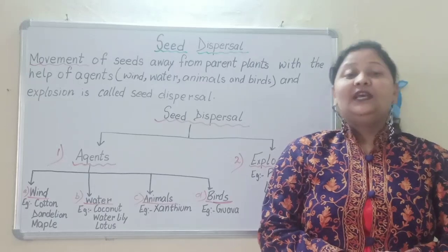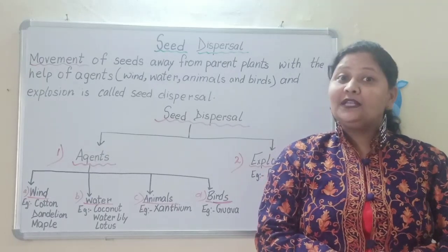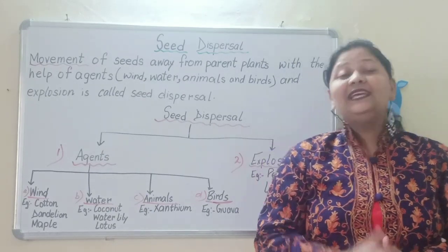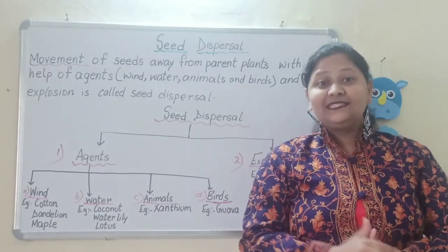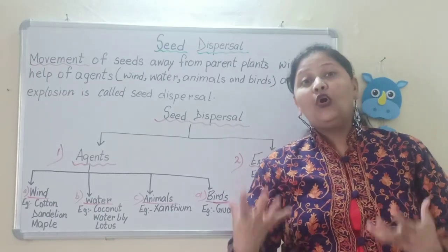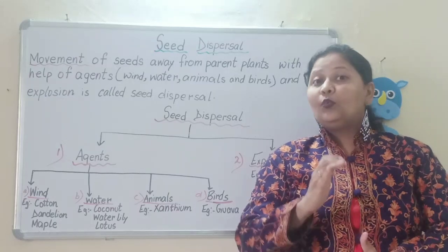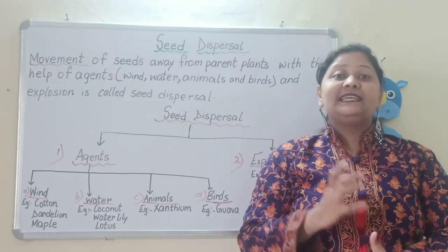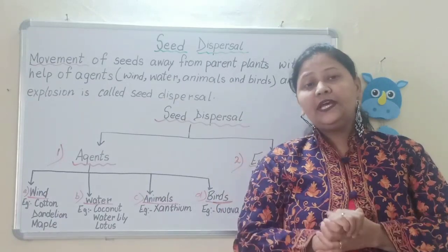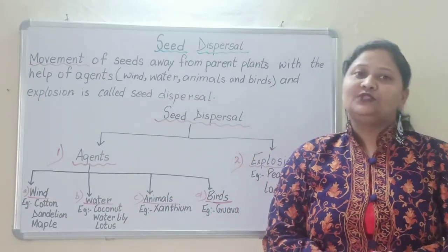Now, after fertilization, what all happens. First, I will tell you the stamen, which we have studied as a male part, and along with the stamen, the petals — that is the colored part of the flower — these wither. Now, when we are talking about calyx, or we can say sepals together, calyx may be intact, or it will dry and fall off. It has two fates after fertilization.